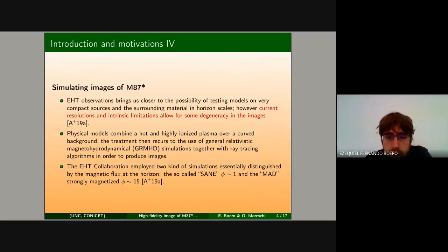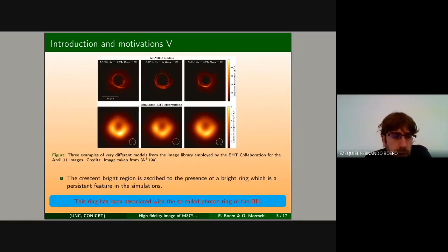There are ones that are called SANE models which are mildly magnetized, and the other ones referred to as MAD or magnetically arrested disks which have the property of being strongly magnetized. In this picture I'm showing an example. We have three different models on the top panel: one of them is a SANE type of high spin, the other is spinless, and the third one is of MAD type but also high spin. You can see all of them deliver quite similar images.